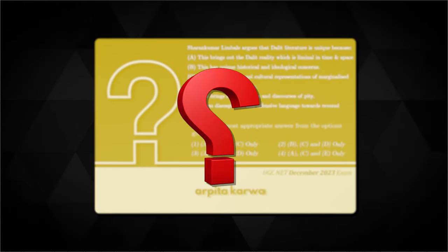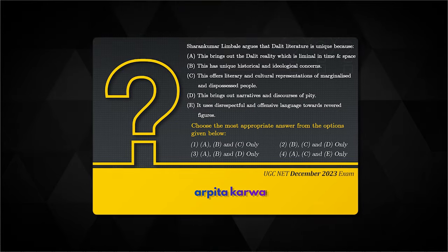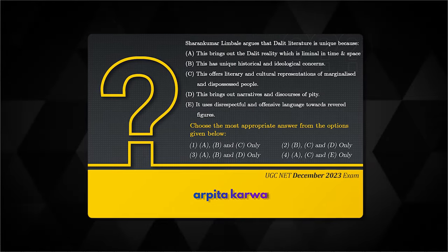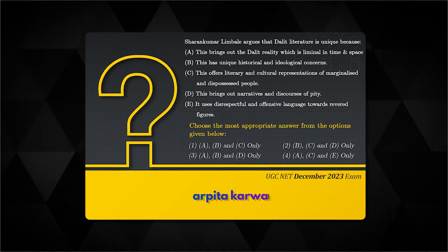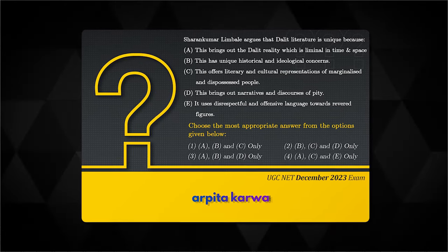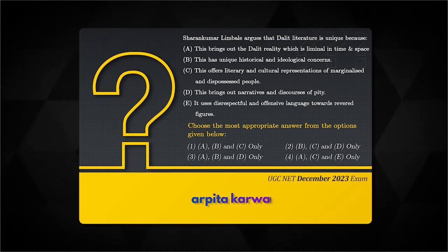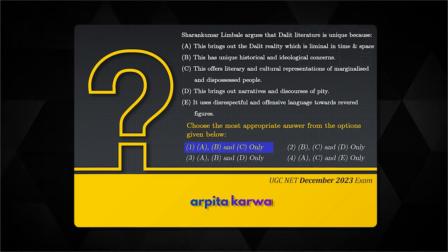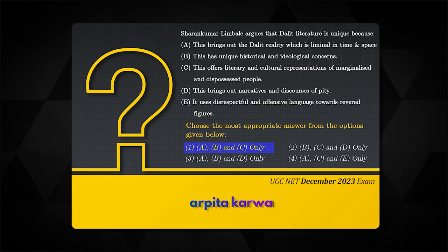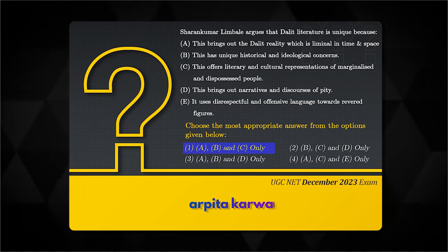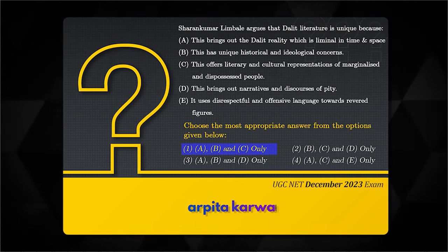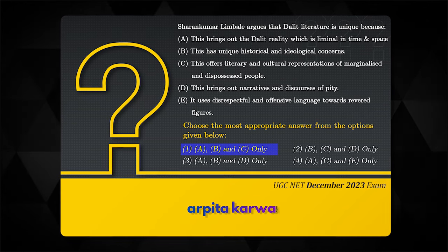Here is a past-year question asked in the UGC NET December 2023 exam: 'Sharad Kumar Limbali argues that Dalit literature is unique because...' — you have to determine which of statements A, B, C, D and E are correct, then choose your answer from options 1, 2, 3 or 4. The answer is option 1 — A, B and C only — because D and E do not make any sense. This is a very easy question from Dalit literature and something similar could be asked in your upcoming exam.